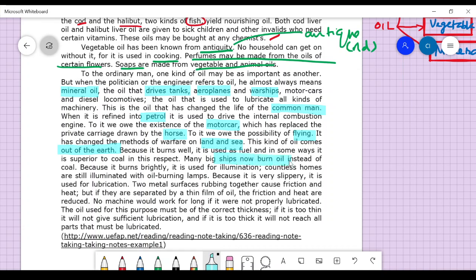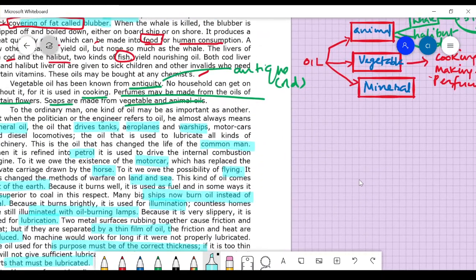This oil comes from out of the earth. Because it burns well, it is used as fuel. In some ways it is superior to coal - many big ships now burn oil instead of coal. Because it burns brightly, it is used for illumination. Countless homes are still illuminated with oil-burning lamps. You will write points about mineral oil: it's used for fuel.